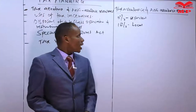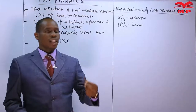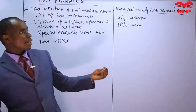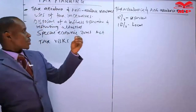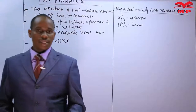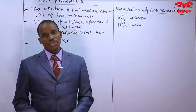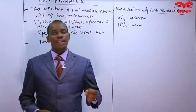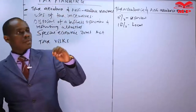Anti-avoidance measures refer to situations whereby the Commissioner can scrutinize transactions. This is covered under Section 23 of the Income Tax Act, which states that not all transactions are acceptable as tax avoidance techniques. There are two major cases where the Commissioner can reject particular transactions. For instance, if a director in a company buys a car from that company at a throwaway price -